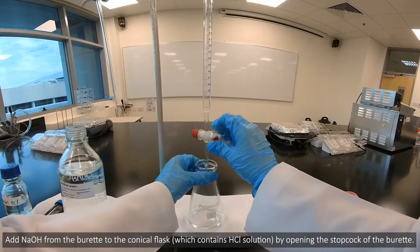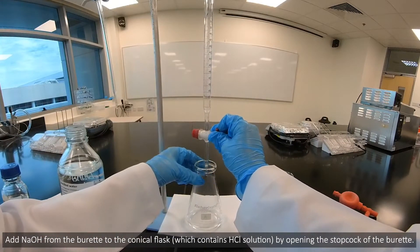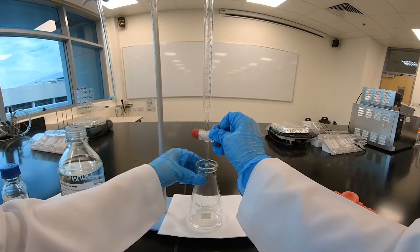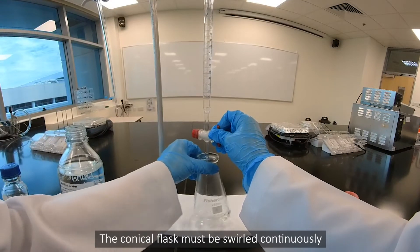Add NaOH from the burette to the conical flask, which contains HCL solution, by opening the stopcock of the burette. The conical flask must be swirled continuously.